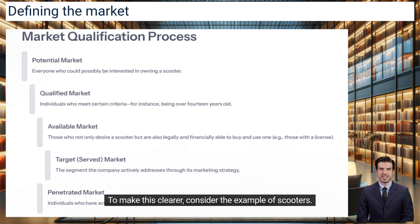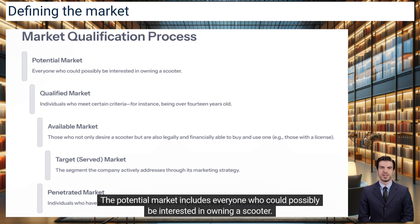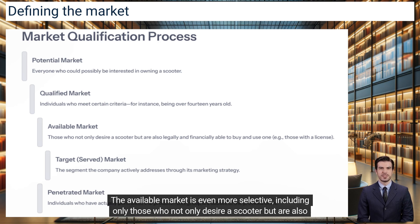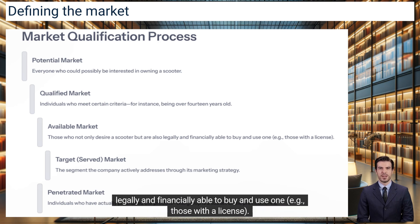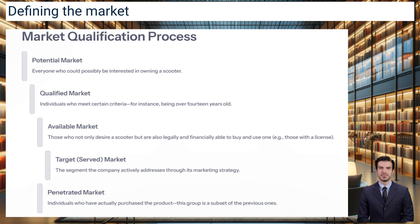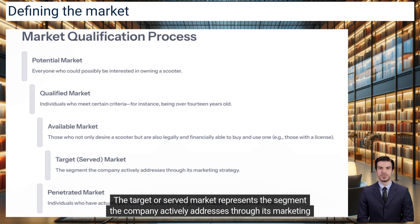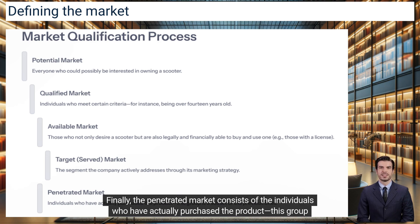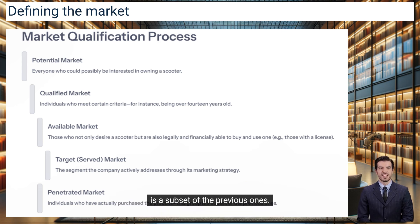To make this clearer, consider the example of scooters. The potential market includes everyone who could possibly be interested in owning a scooter. The qualified market narrows this group to individuals who meet certain criteria — for instance, being over 14 years old. The available market is even more selective, including only those who not only desire a scooter but are also legally and financially able to buy and use one, e.g., those with a license. The target or served market represents the segment the company actively addresses through its marketing strategy. Finally, the penetrated market consists of the individuals who have actually purchased the product — this group is a subset of the previous ones.